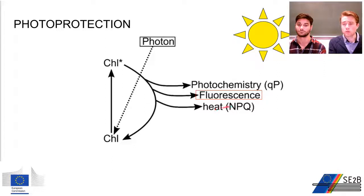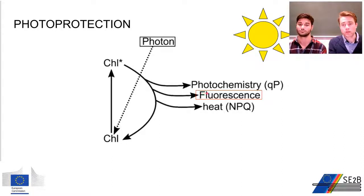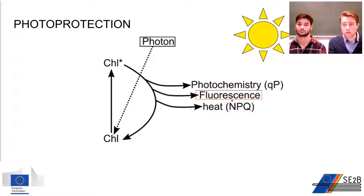One factor that remains constant in this scheme is fluorescence, and fluorescence is actually very measurable. From this fluorescence we can get information about all the other factors: we can get information on the photochemistry, on non-photochemical quenching, and even on the damaging effects of reactive oxygen species. It's important to know that fluorescence is normally used as a measurement for all these kinds of things.